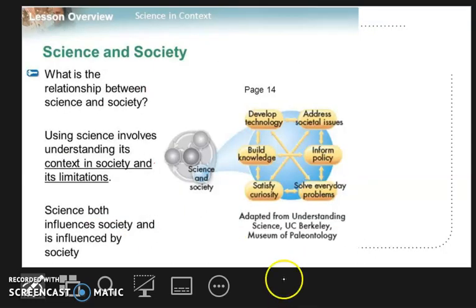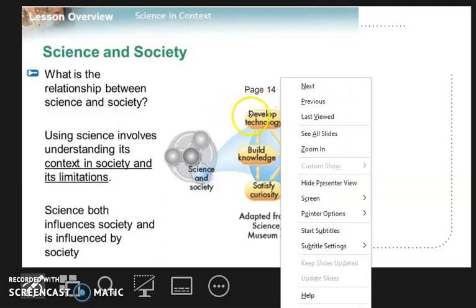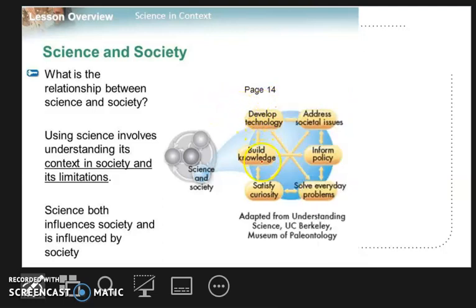What is the relationship of society and science? Develop technology to address societal issues. In order to address societal issues, develop technology. How to develop technology? You need to build knowledge. You need to build knowledge in order to develop technology. To build knowledge, you need to satisfy your curiosity. You need to be curious to build knowledge and develop technology that can address societal issues.